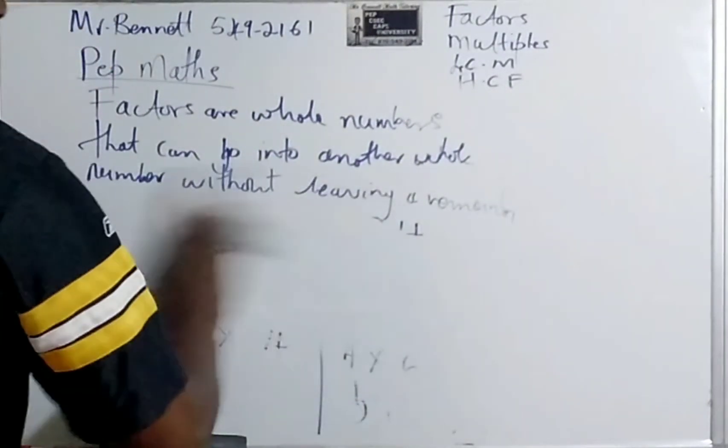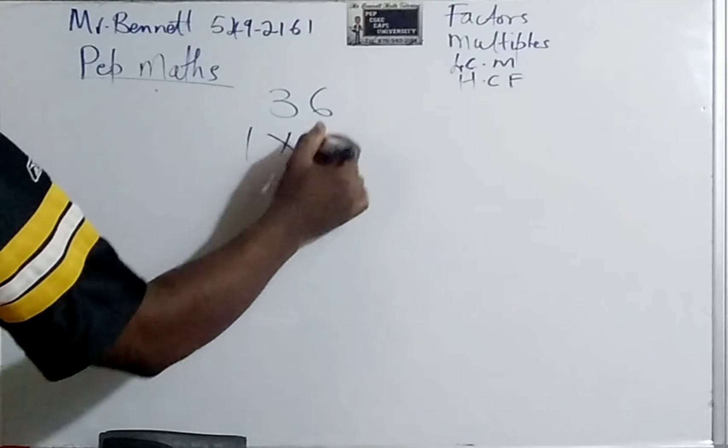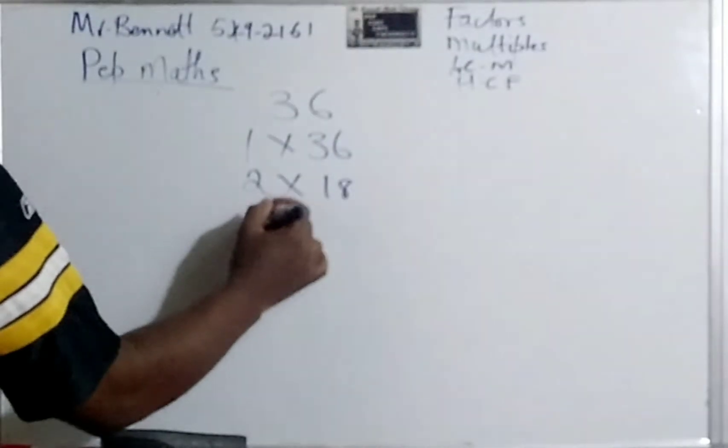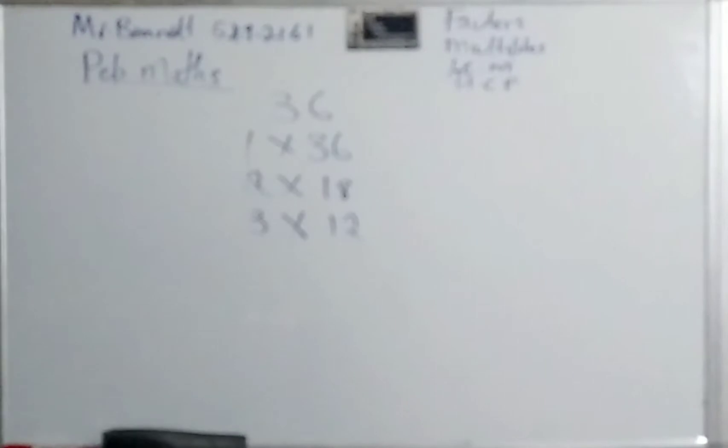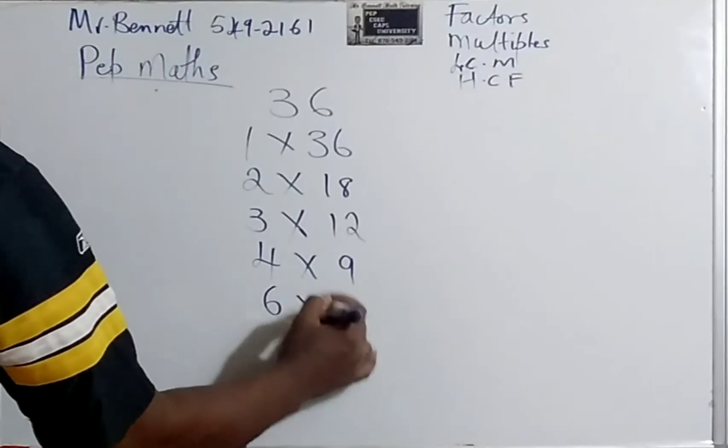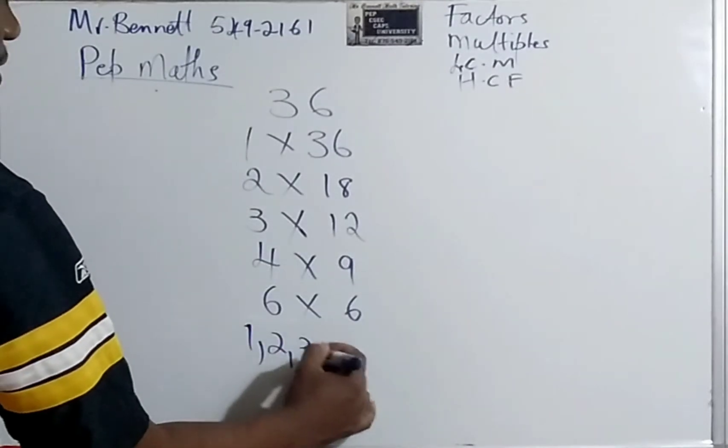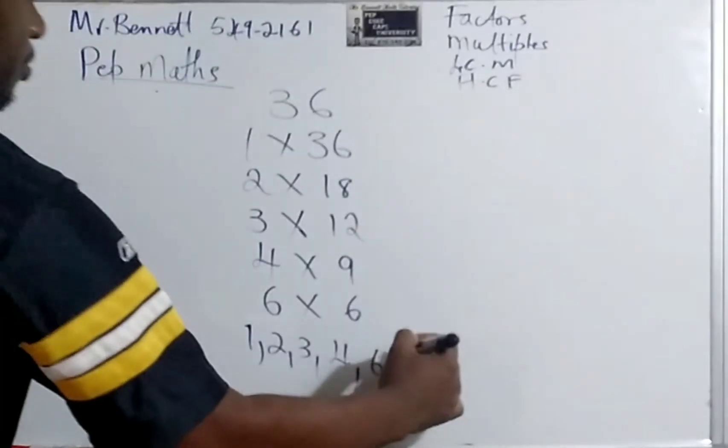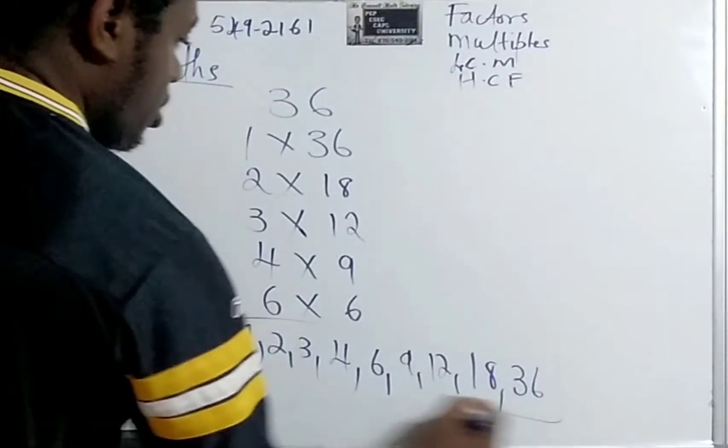All right, guys. Let's go again. Let us look at 36. All the factors of 36. 1 times 36. 2 times what? Remember, 2 can go into every even number. So 2 times 18. Can 3 go in there? Remember, it's like we divide 3 into 36, that goes 12 times. Let us check 4. Yes. 4 nines 36. Let us look at another number, 6. So it will be 6 times 6. So when you are listing them now, the factors will be 1, 2, 3, 4, 6. Then I go up now. 9, 12, 18, and 36. So these are all the factors of 36.